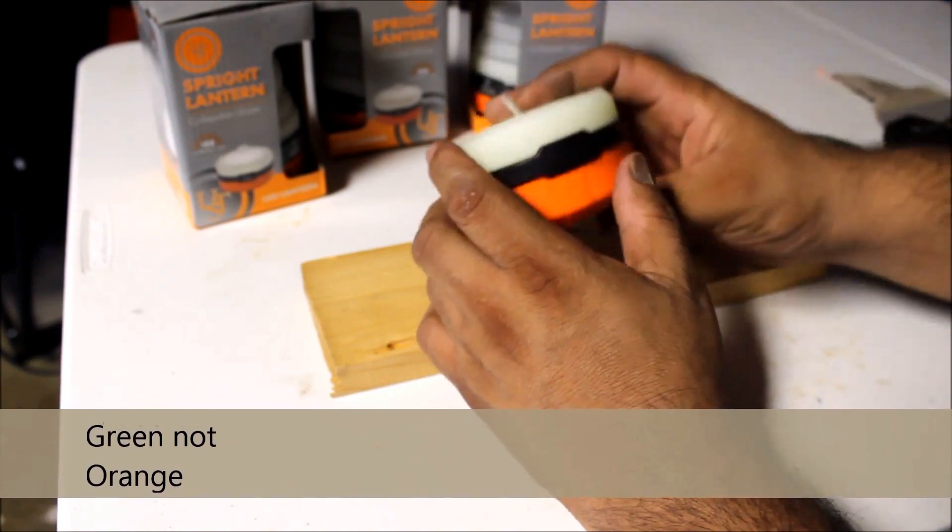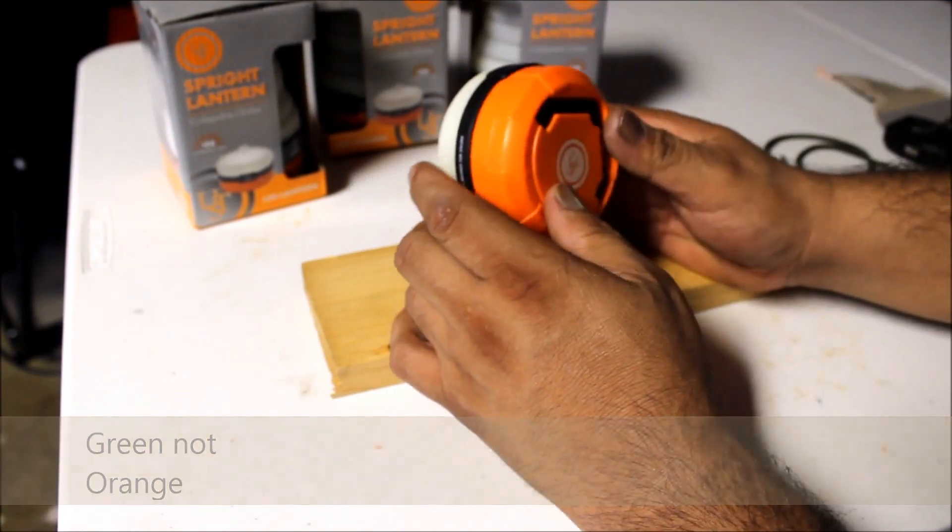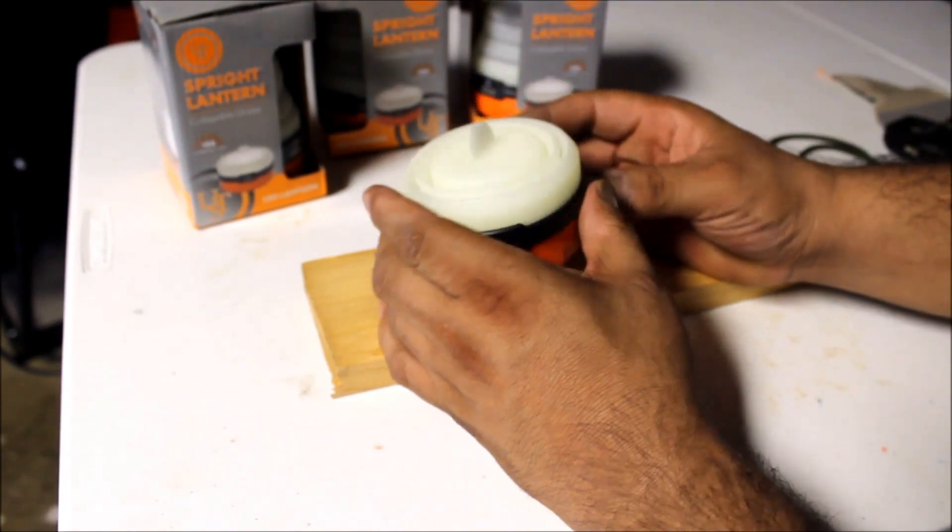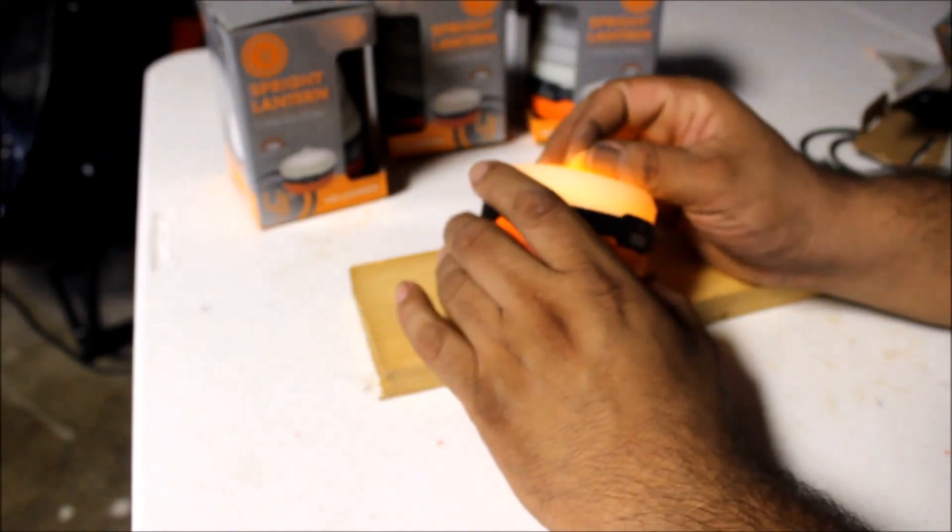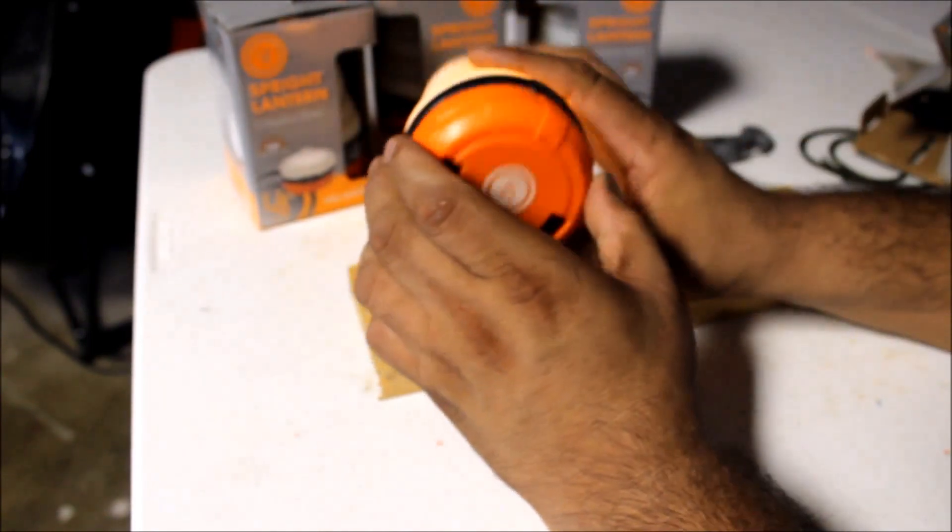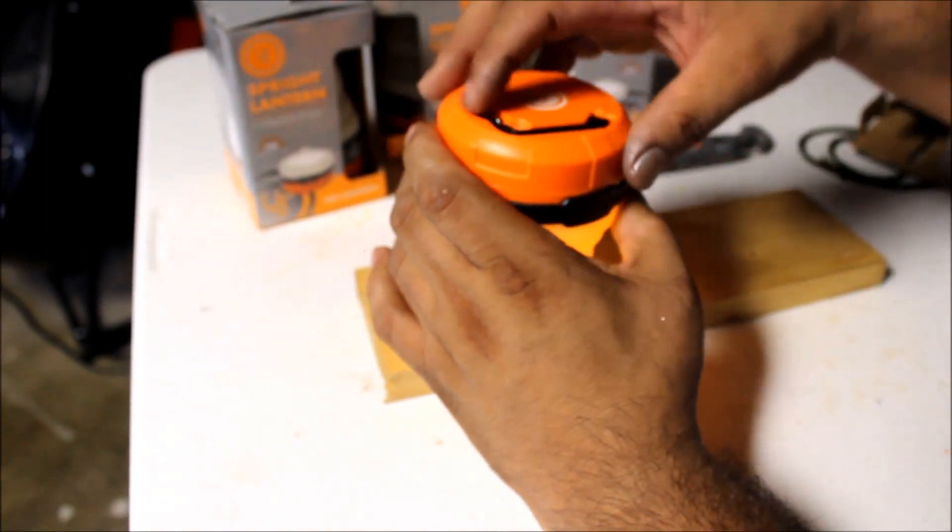It's lightweight. I don't have a scale with me or I would weigh it, but I simply love this light and my family does too. Again, it's collapsible and you've got this hook over here.